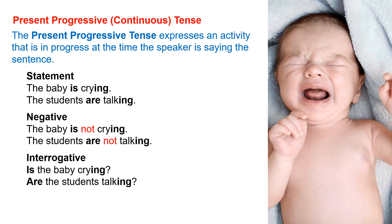The Present Progressive Tense expresses an activity that is in progress at the time the speaker is saying the sentence.